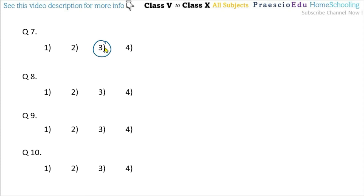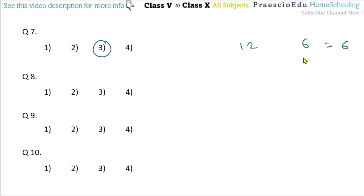Question number 8: What is the difference in the number of edges and the number of faces of the cube? Edges of a cube = 12, faces = 6. So 12 minus 6 = 6. The difference is 6, and this is given in option number 2.